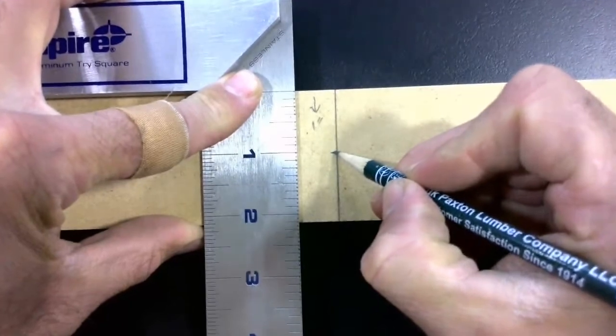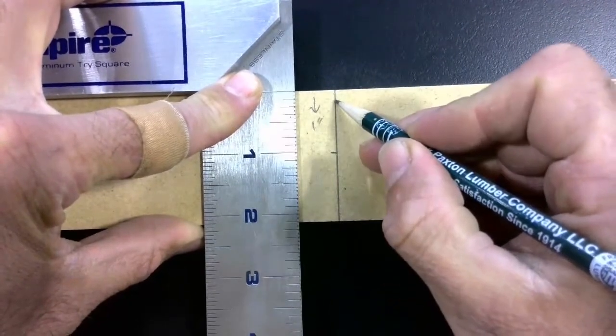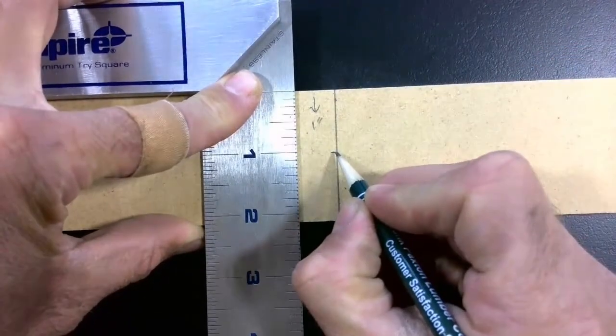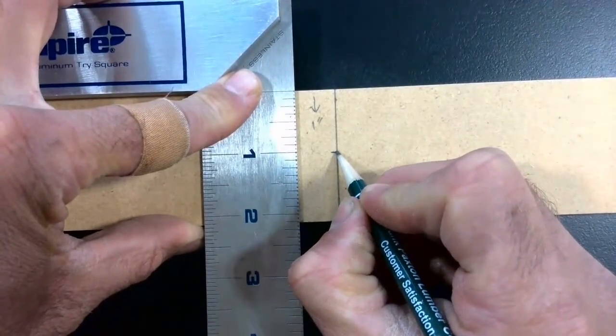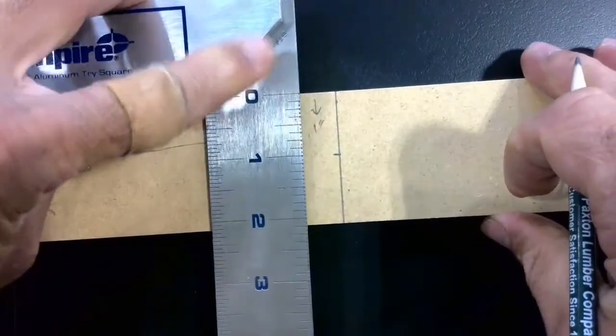Now right down here, where my one inch mark is, because I drew it close to my six inch mark, I can see that this is one inch on my mark.